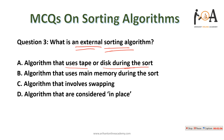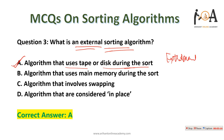The next question: what is an external sorting algorithm? Option A — an algorithm that uses tape or disk during the sort — is the correct answer. If our algorithm uses any extra memory outside main memory, we say it is an external sorting algorithm. Disk and tape are external memory types, so option A is correct.